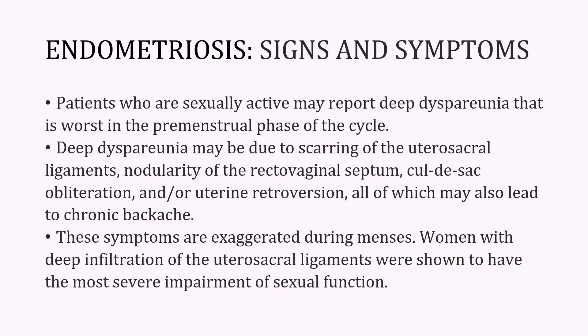Patients who are sexually active may report deep dyspareunia that is worst in the premenstrual phase of the cycle. Deep dyspareunia may be due to scarring of the uterosacral ligaments, nodularity of the rectovaginal septum, cul-de-sac obliteration, or uterine retroversion, all of which may lead to chronic backache. These symptoms are exaggerated during menses, and women with deep infiltration of the uterosacral ligaments seem to have the most severe impairment of sexual function.